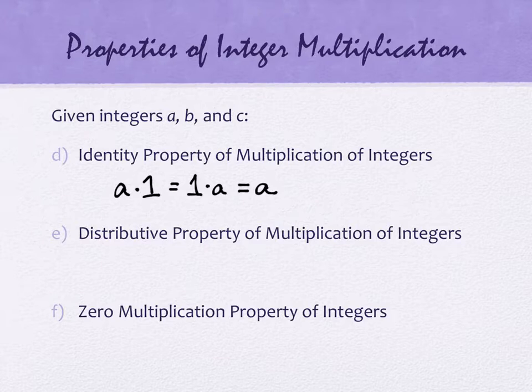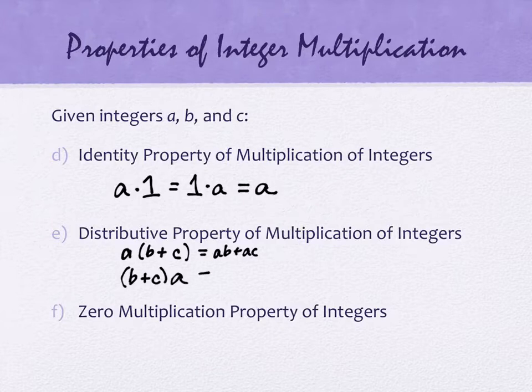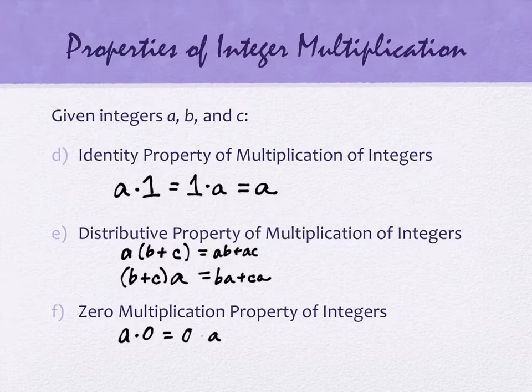The distributive property is A times the quantity B plus C is equal to AB plus AC. And you can actually look at it from the other perspective as well. If the addition were first and the multiplication were second, it's the same way. And the last one is the zero multiplication property. What happens when you multiply by zero? You get zero. That is the exact exciting fact about zero is that A times zero or zero times A is equal to zero. Just like with the additive identity, the number zero is the unique number that does this. No other number does it.